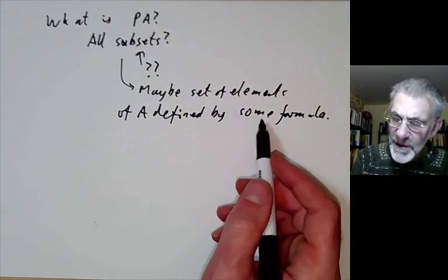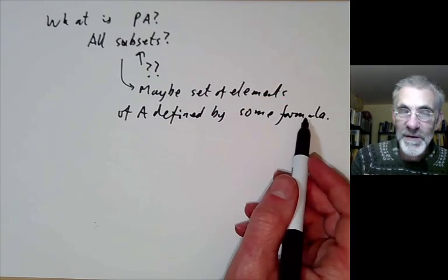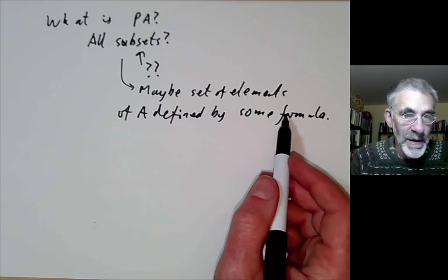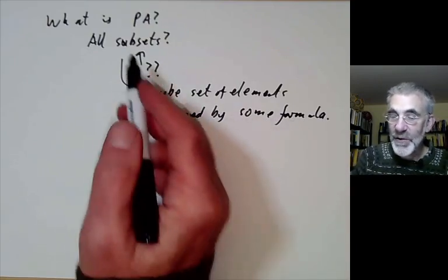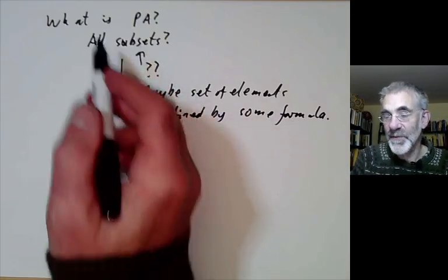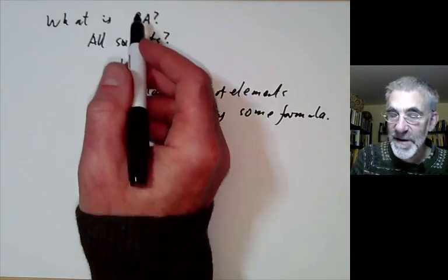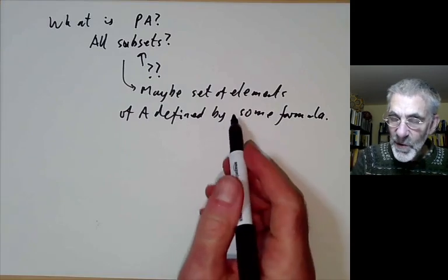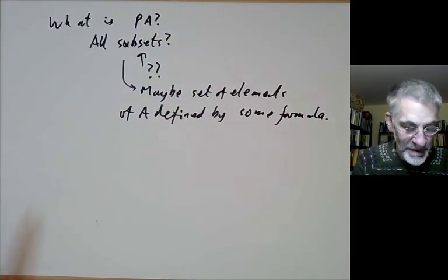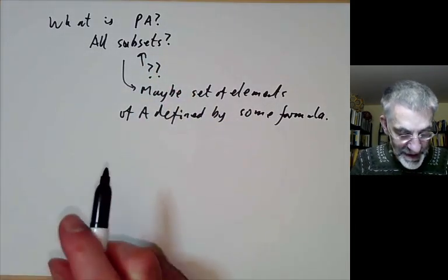Well that's still a problem because you know it has to be a formula in some language and maybe a language is only going to have a countable number of statements in it. So that will only give us a countable number of subsets and we actually want an uncountable number of subsets of an infinite set by Cantor's theorem. So we run into all these funny problems of trying to actually define what a subset actually is.